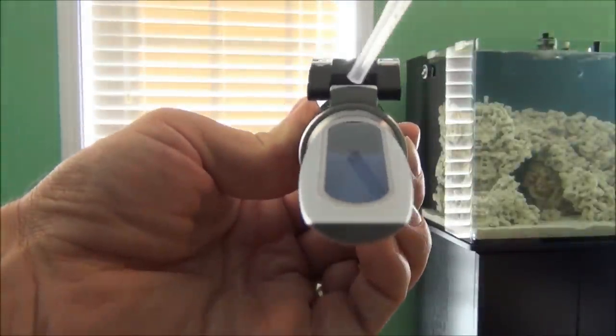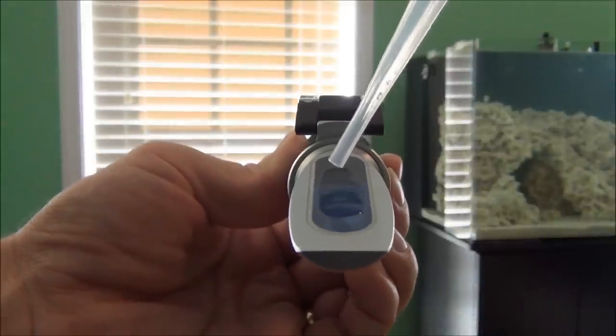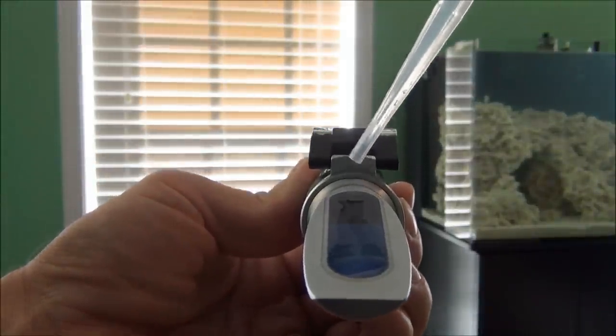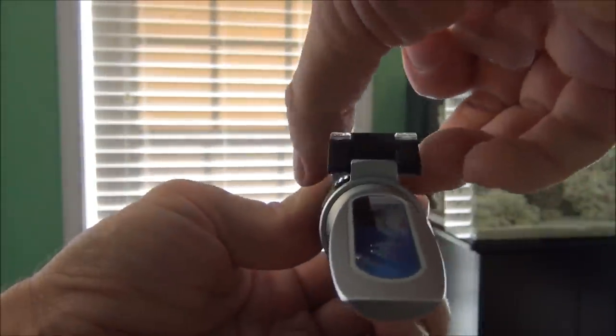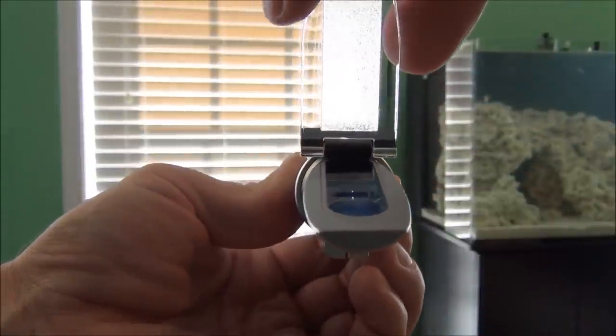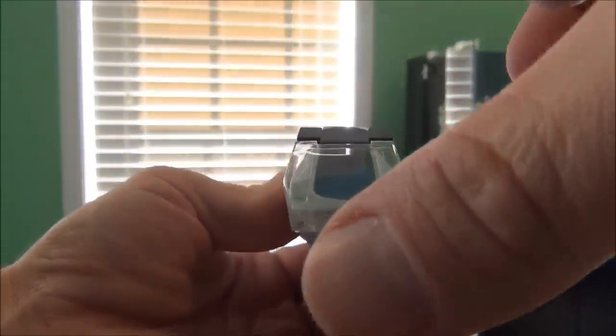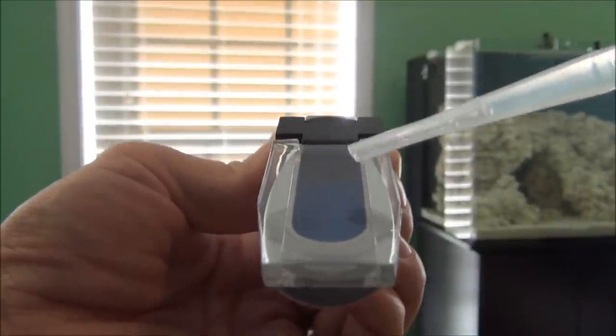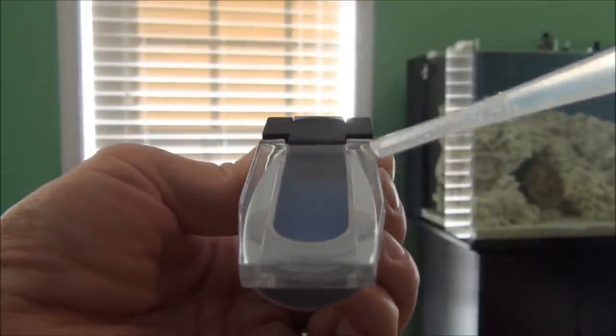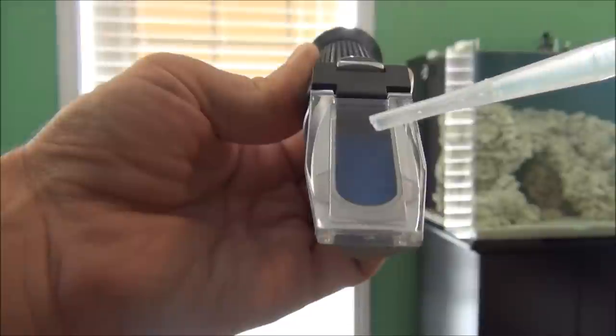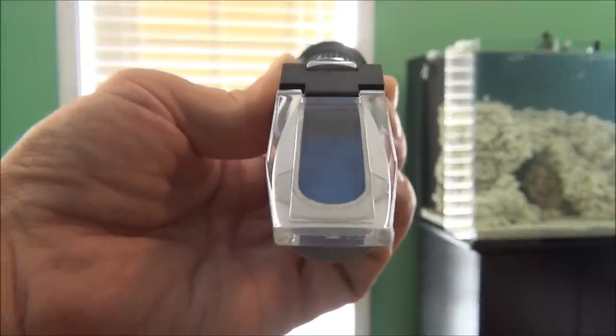Now, you place several drops on the prism, making sure you get it good and covered. And then you take the daylight plate and you're going to put it over the prism lens. See how there aren't any air bubbles in this? That's very important. You want to make sure that the prism lens is completely covered with your sample.